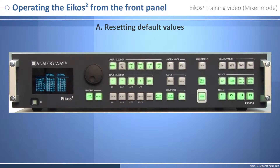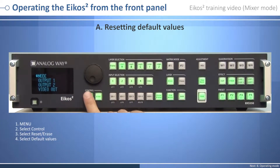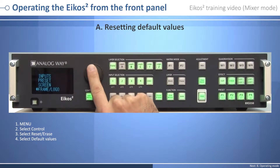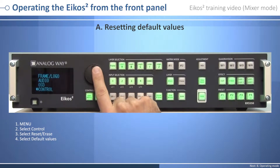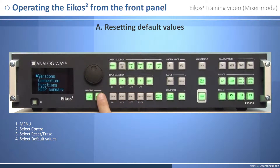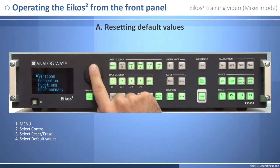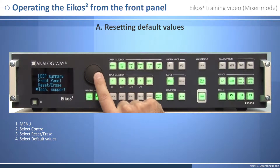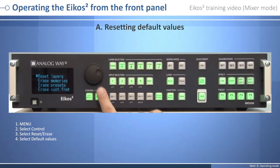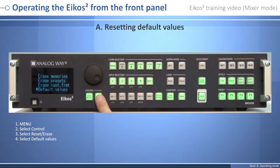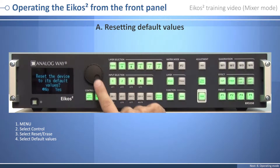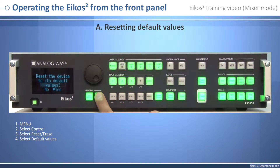Resetting default values: to reset default values, press the exit menu button and select Control in the menu by rotating the corresponding knob, then press the Enter button to enter the reset/erase submenu. Select Default Values by rotating the scroll knob and press Enter to restart your ACOS 2 with its factory settings.